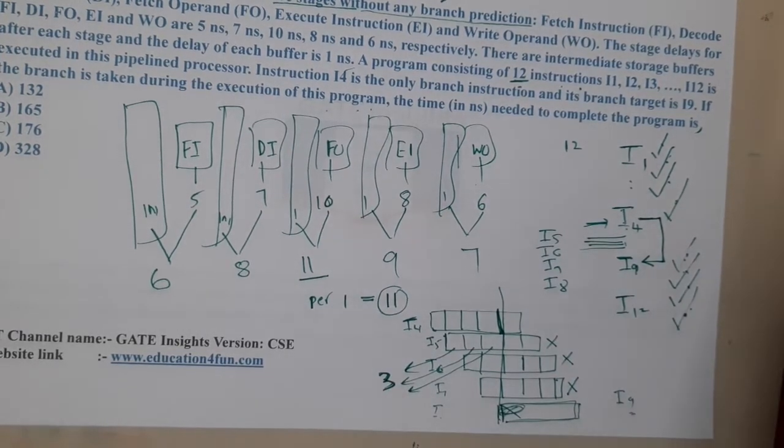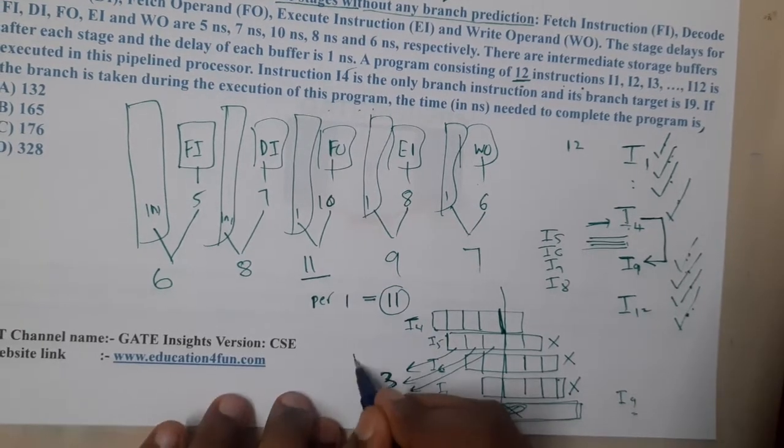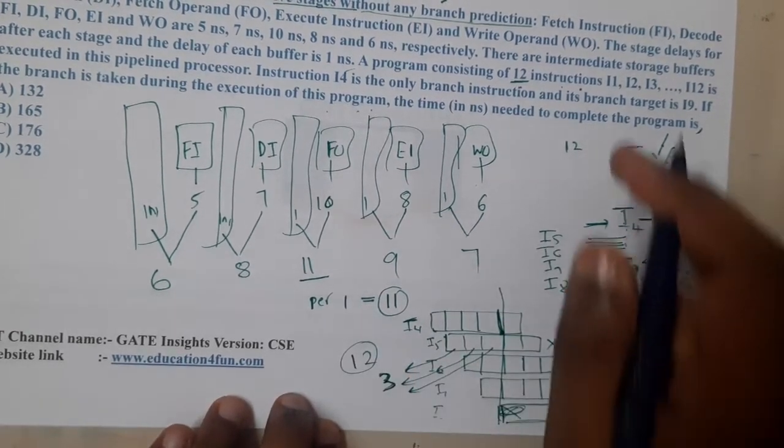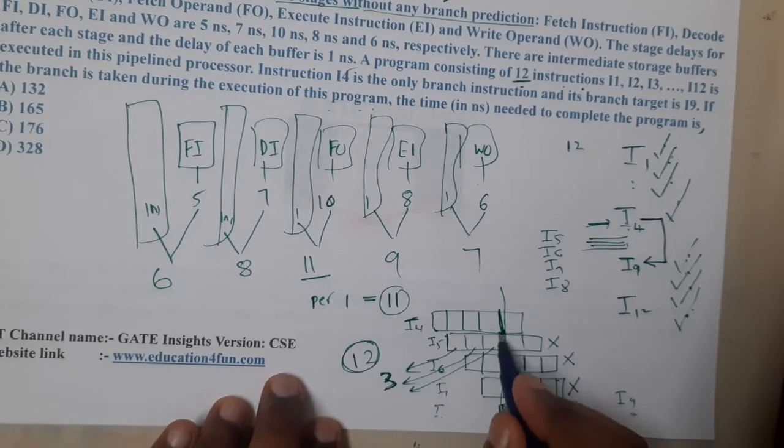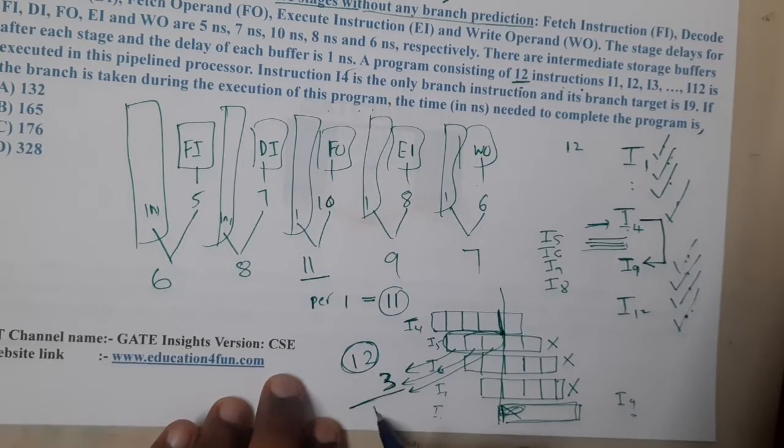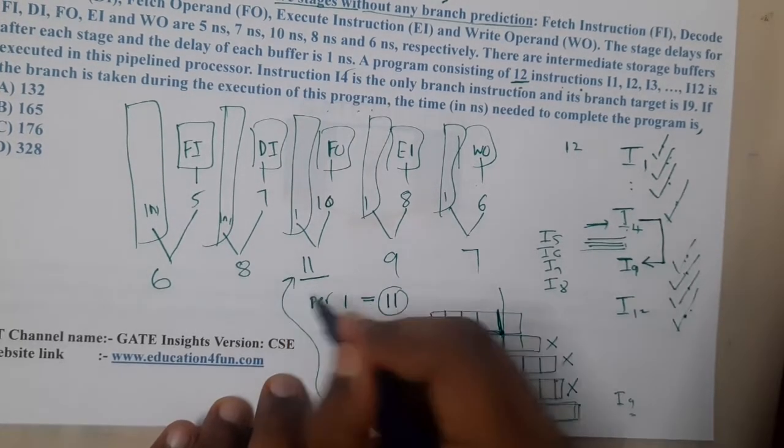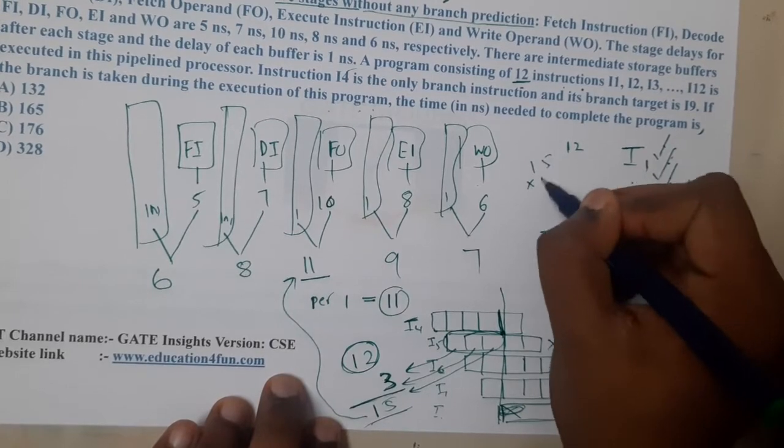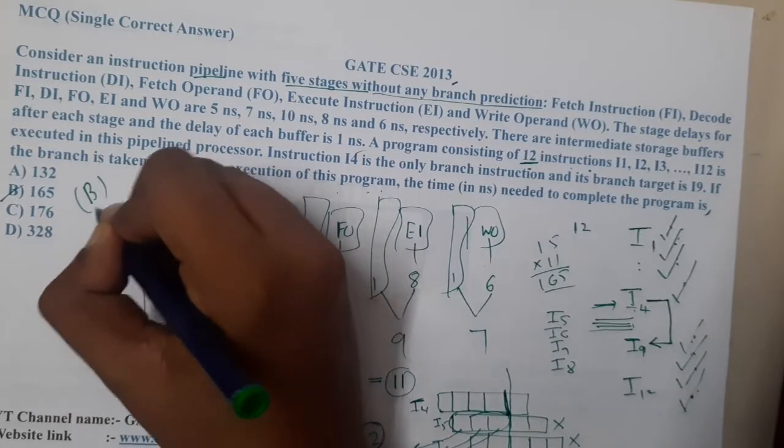In total, along with our 12 stage lines, the total count of instructions, along with these 12 we are wasting more three stages here. In total, how many are the total stages? That is 15 stages. Each stage takes how much time? 11 nanoseconds. So 15 into 11 is nothing but 165, and 165 is our result. It's a quite easy question.